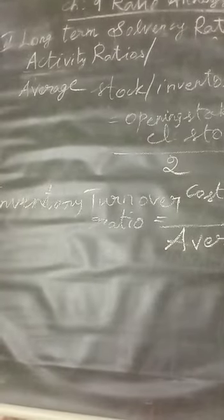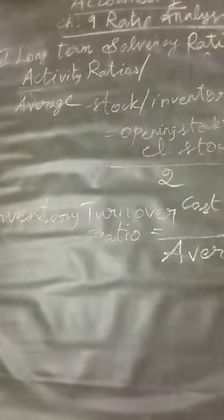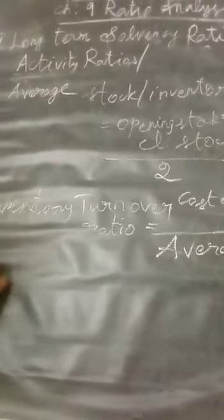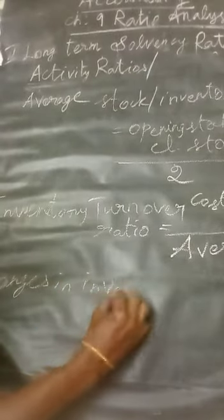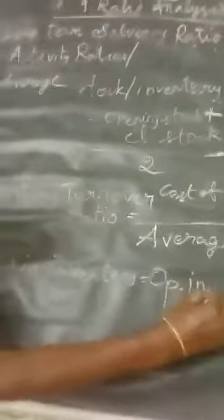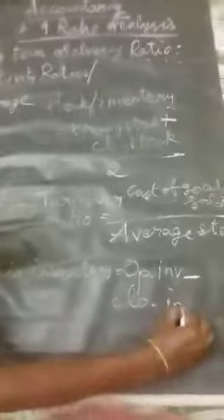The changes in inventory and direct expenses: changes in inventory is equal to opening inventory minus closing inventory.